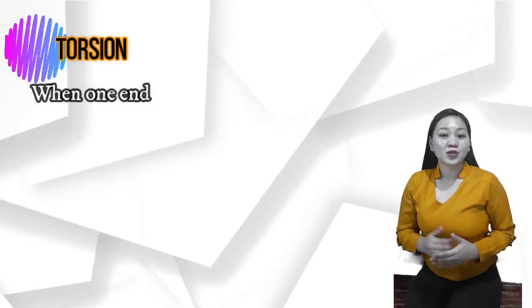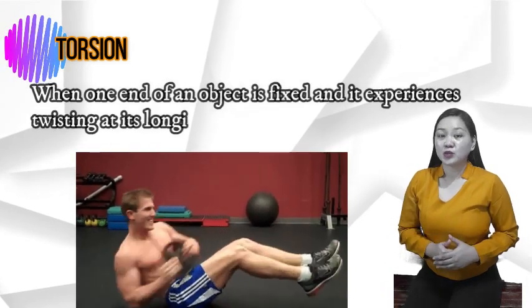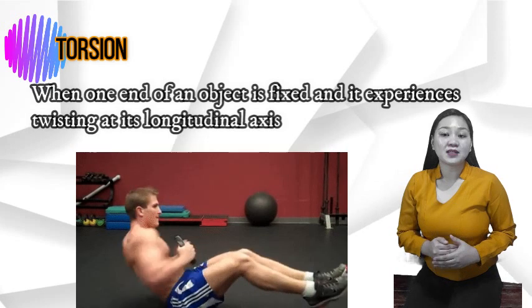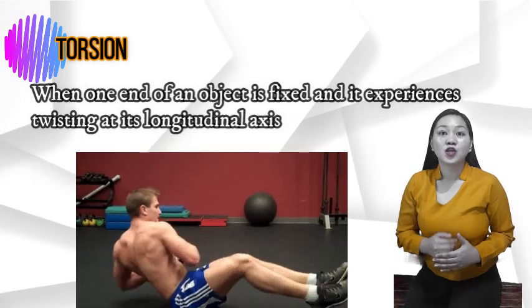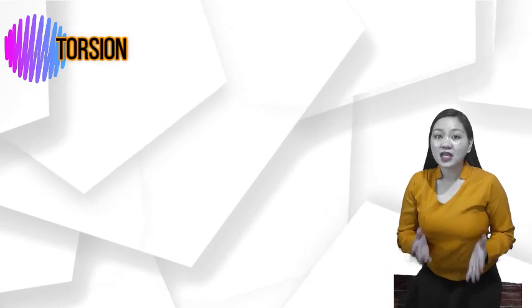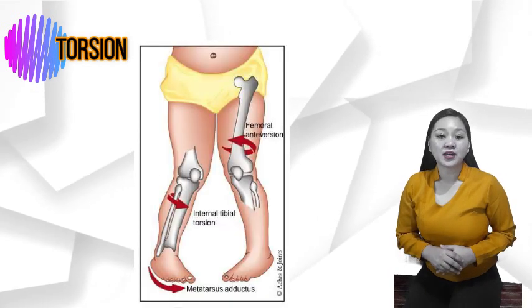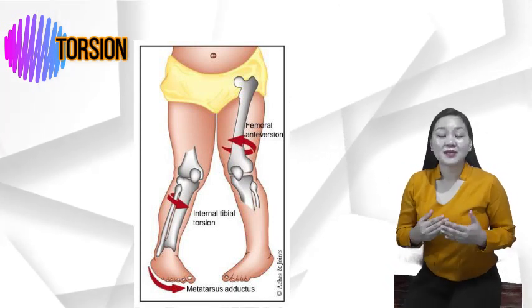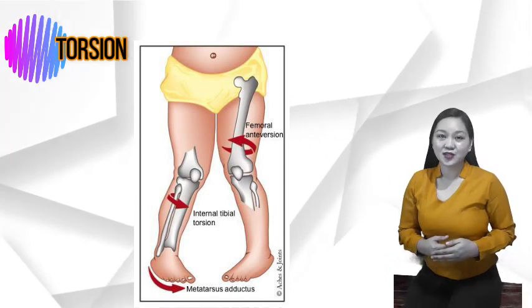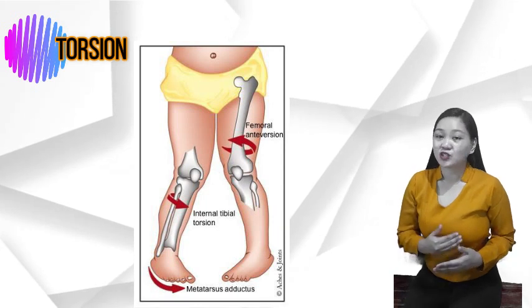Torsion. Torsion is when one end of an object is fixed and it experiences twisting at its longitudinal axis. Injuries that involve torsion are pretty common in sports, especially when the playing surface has a lot of traction.